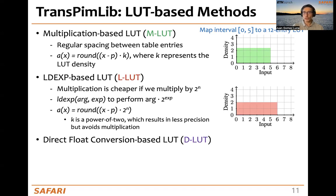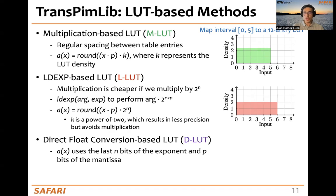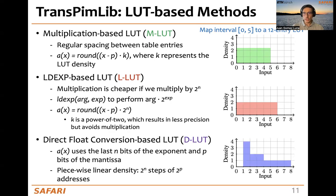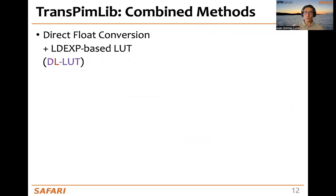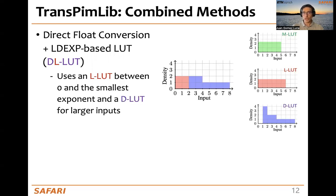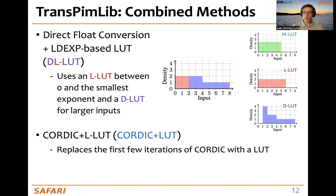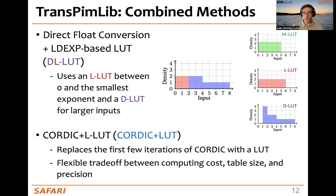The third possibility is the direct float conversion-based lookup table, or DLUT. Here, we take advantage of the natural non-linearity of floating-point representation, generating the address using the last N bits of the exponent and P bits of the mantissa. The result is a piecewise linear density of 2^N steps of 2^P addresses. The problem with DLUT is that it has no entries between 0 and the smallest exponent. To solve this, we propose a combined method — DLUT plus LDUT — which uses an LDUT between 0 and the smallest exponent and a DLUT for larger input. TransPIMLib also uses a CORDIC plus LUT method, replacing the first few iterations of CORDIC with a lookup table, providing a flexible trade-off between computing cost, table size, and precision.